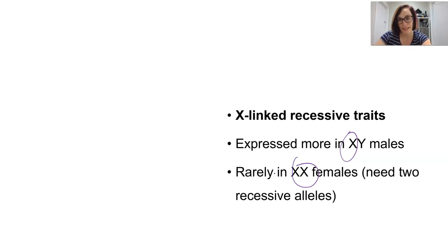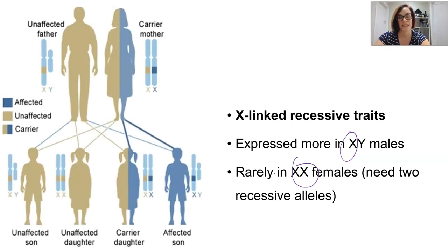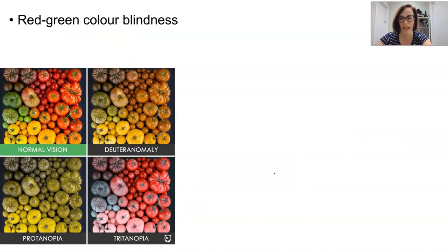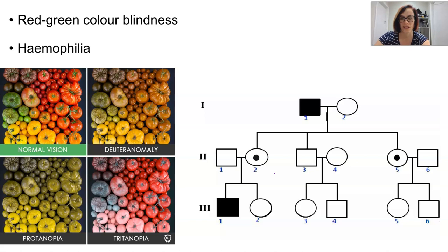If both alleles in the female happen to be recessive, then the recessive phenotype is going to be observed — but this is actually pretty rare. Because of this situation, biological females can actually be carriers of the disease or the trait. So they don't express the recessive phenotype, but they can pass it on to their offspring. Red-green colour blindness is inherited in this way, as is haemophilia, which is a disorder where the blood does not clot in the normal way.